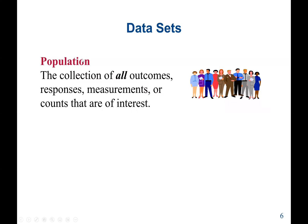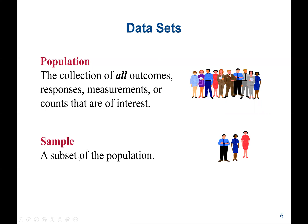What is a data set? We have two types. First, we have the population — the collection of all outcomes, responses, measurements, or counts that are of interest. Then we have a sample, which is a subset of the population. For example, in New York City, our population will be 5 million. If we want to collect a sample, we may take only 1,000 or 1 million from that population. So a sample is part of the population.